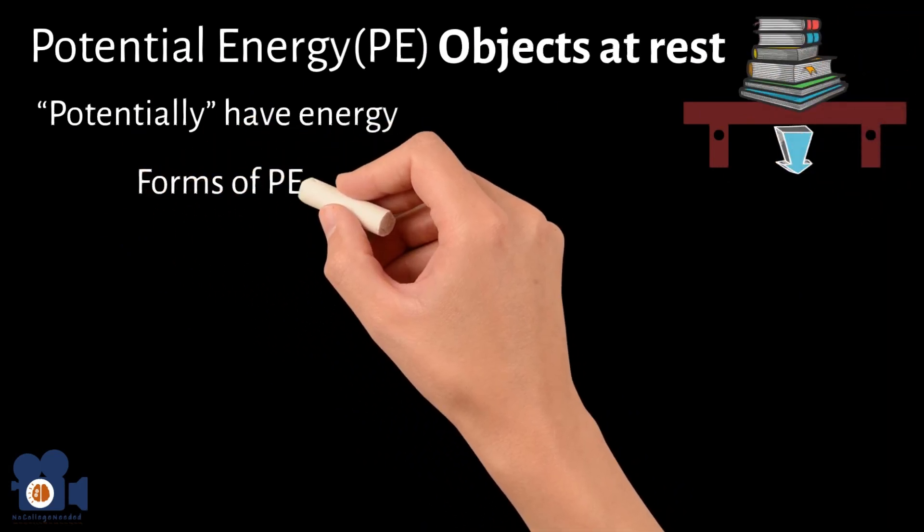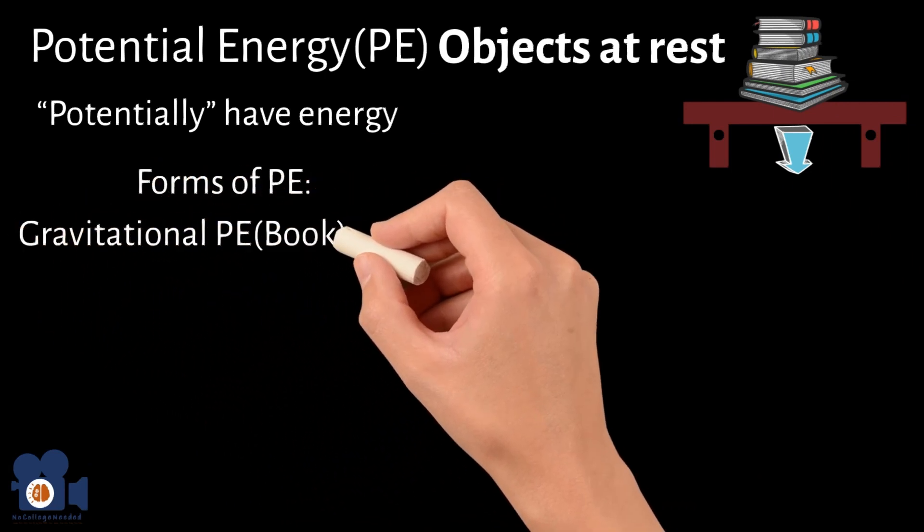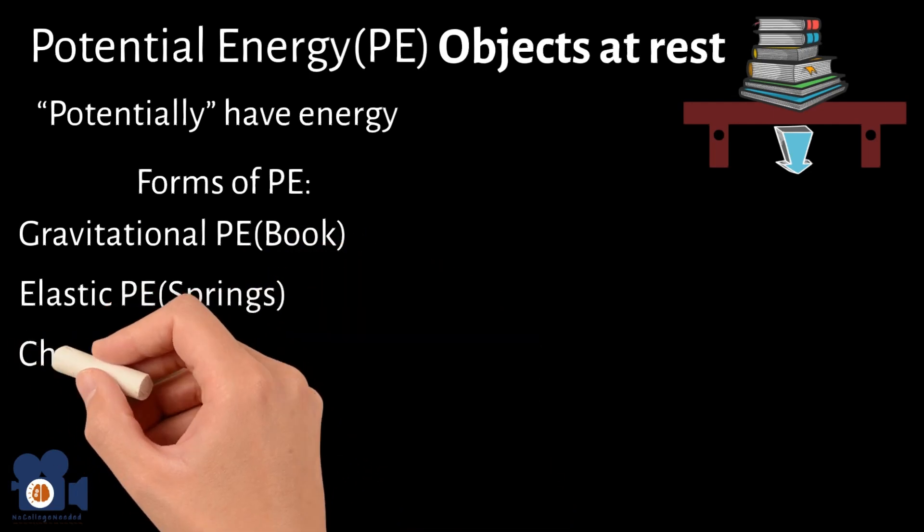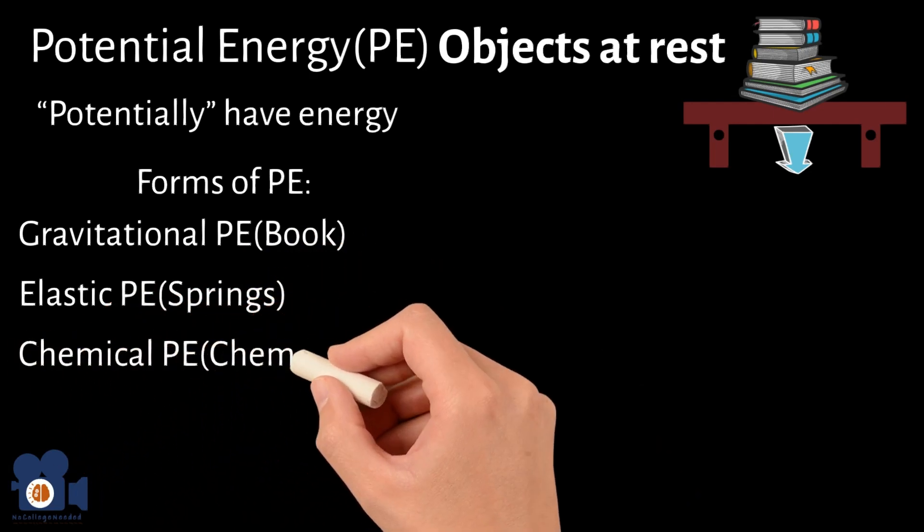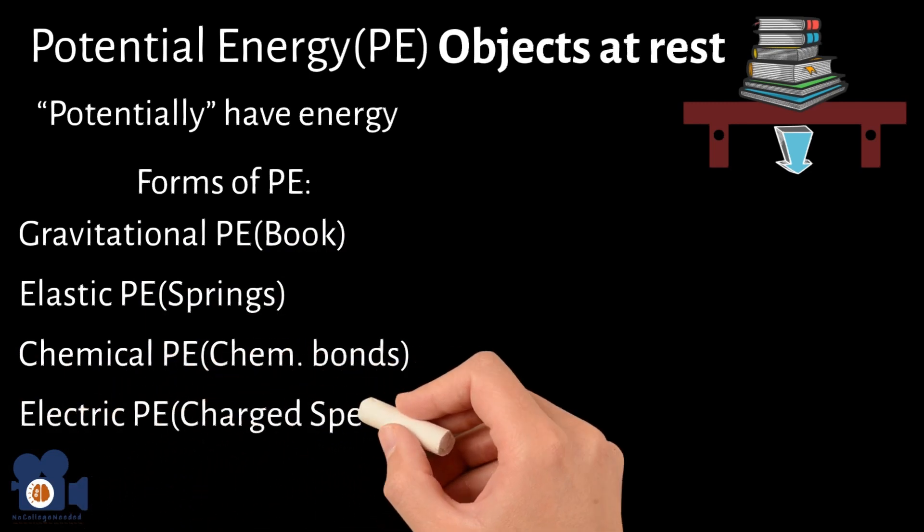There are multiple forms of potential energy, such as gravitational potential energy, the book example, elastic potential energy, energy associated with springs, chemical potential energy, energy in chemical bonds, and electric potential energy, energy from charged particles.